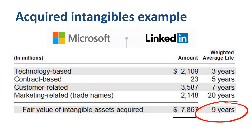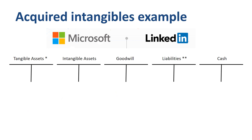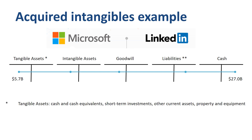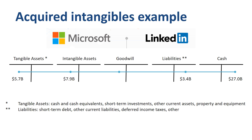Let's review the simplified high-level journal entry for the acquisition of LinkedIn by Microsoft. Five main categories of accounts were impacted. $27 billion was the purchase price — this is a credit to cash. Tangible assets acquired are $5.7 billion, a debit to assets. Liabilities assumed are $3.4 billion, a credit to liabilities. Intangible assets are valued at $7.9 billion, a debit to assets. The remainder is goodwill — the excess of the purchase price paid for an acquired firm over the fair value of its separately identifiable net assets — for $16.8 billion, a debit to goodwill.